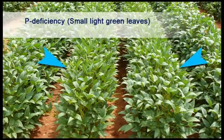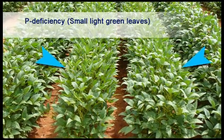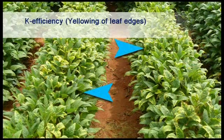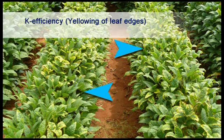Phosphorus deficiency symptoms appear as small light green leaves on the plants. Potassium deficiency is indicated by leaves turning yellow from the edges.